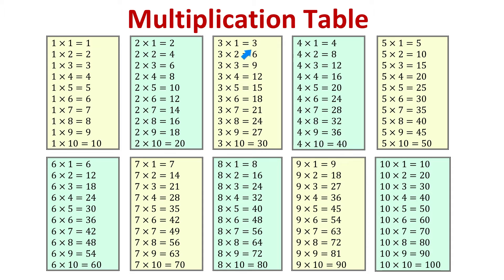Once you have this sequence memorized, it will be easier to memorize multiplication by 3. For example, 3 times 5 means counting by 3 five times. That is 3, 6, 9, 12, 15.